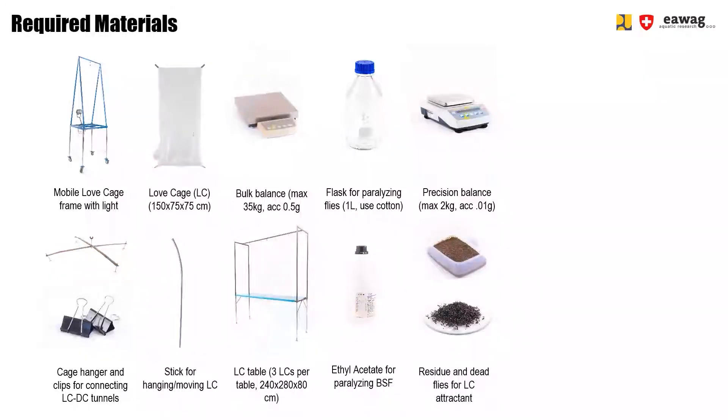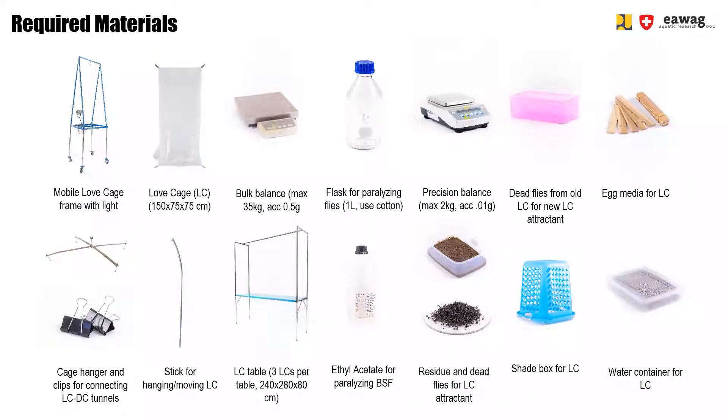The rest of the flies remain in the loft cage, which is then further set up by adding an attractant material in an attractant box, adding egg media, adding a shade box, and topping off the shade box with a water container.